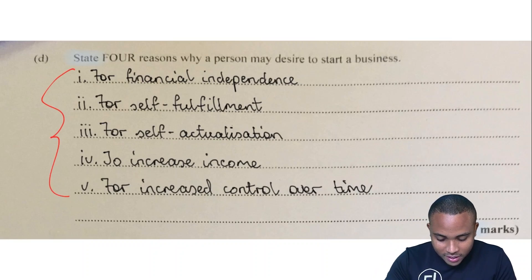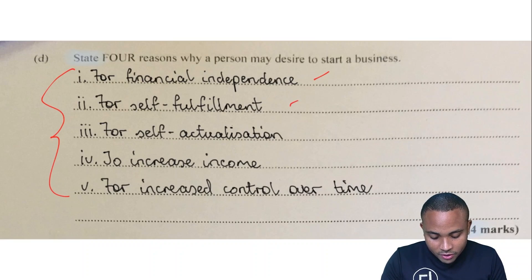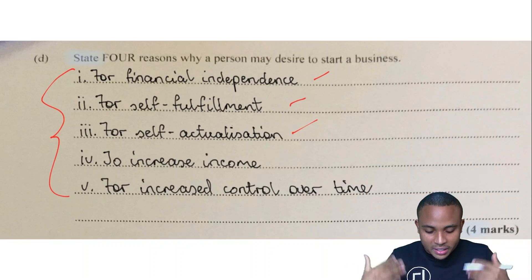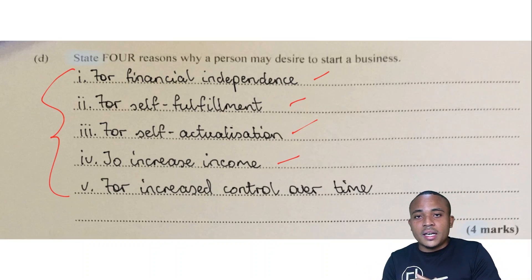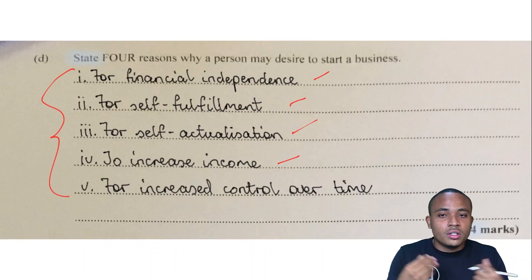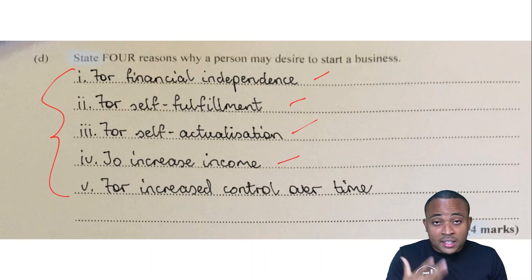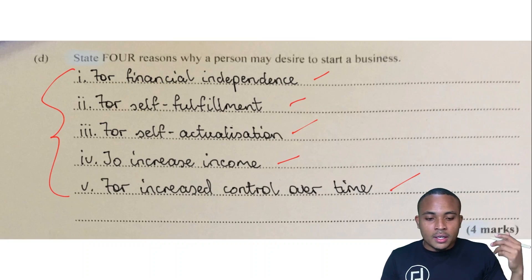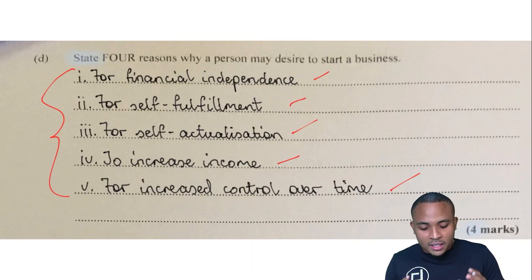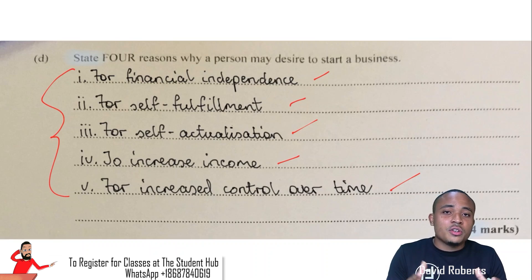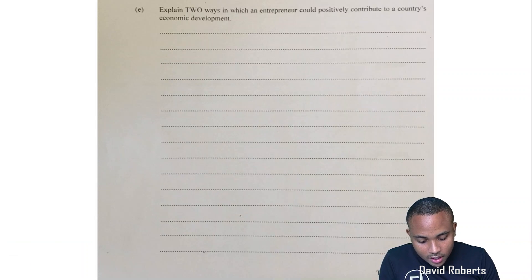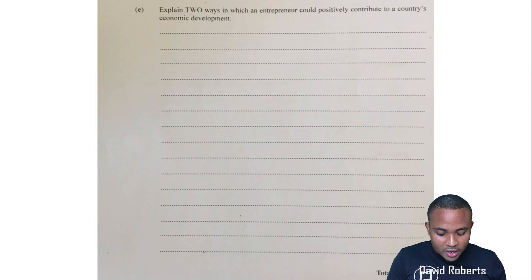The five reasons are: for financial independence; for self-fulfillment — you want to feel good about yourself; for self-actualization — to reach the maximum potential within yourself; to increase their income — if your nine-to-five isn't making enough money, you want to start a business and make more; and to have more control over your time — as the business owner you control your own time and you're your own boss.